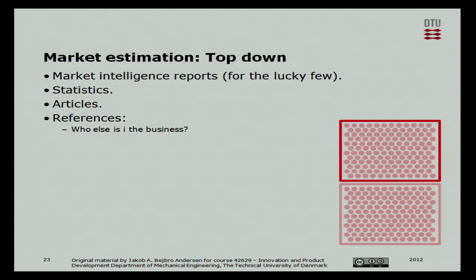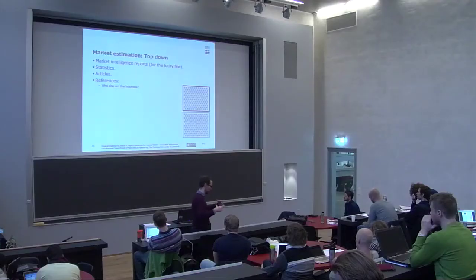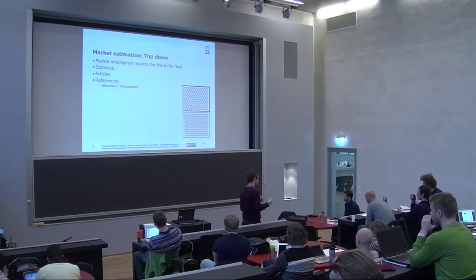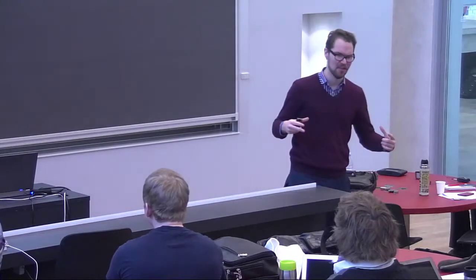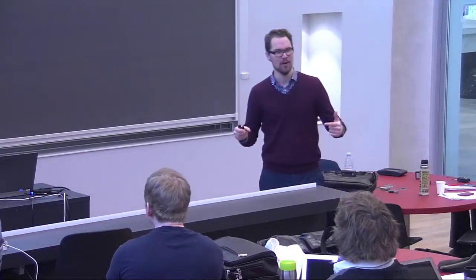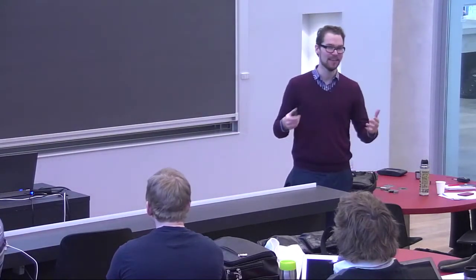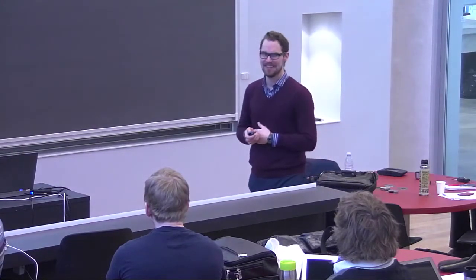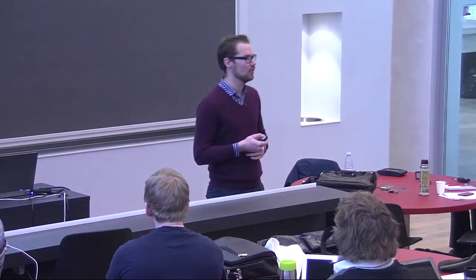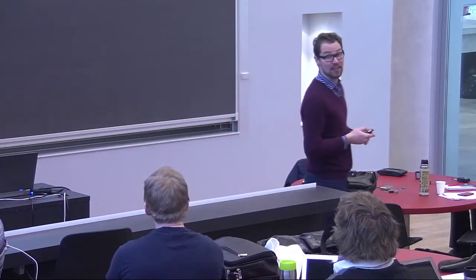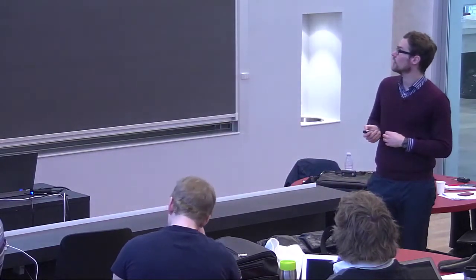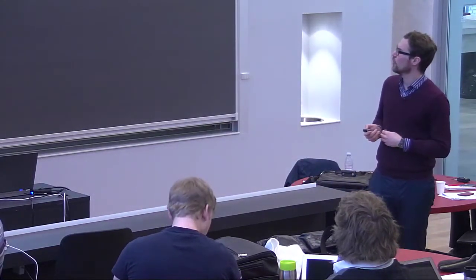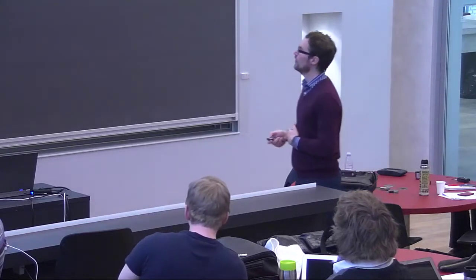The other approach is, of course, the top-down approach. For mature markets, you tend to have big blocks of info — 'the market for diabetes medicine in North America is this large.' Stuff like that is really nice. But it's pretty rare — it's not that often you actually see market intelligence like that. So instead you go into statistics, read articles, and also look at what other companies in this business or related businesses are selling.